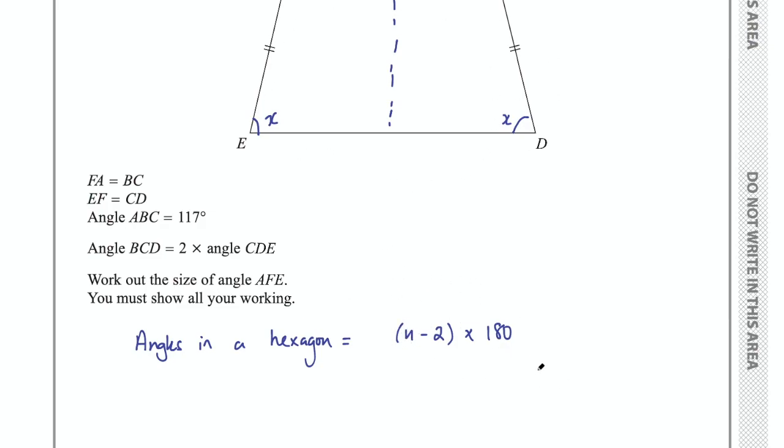So we have 6 sides in a hexagon, so this is going to be 6 minus 2 is 4, times 180. 4 times 180 is 720.